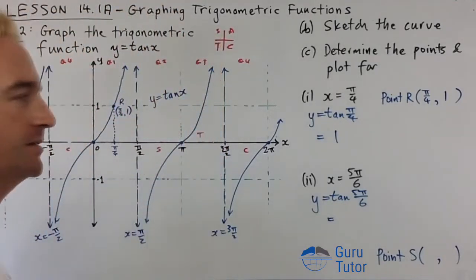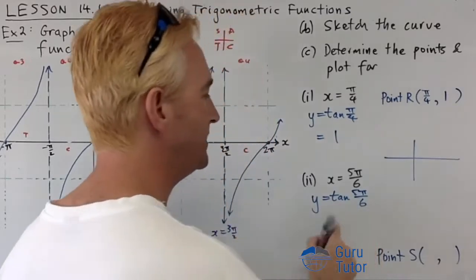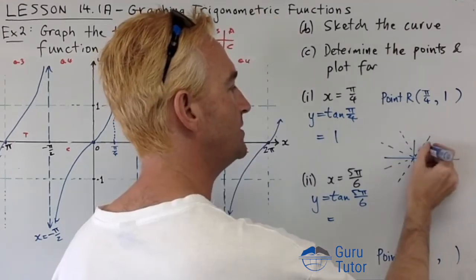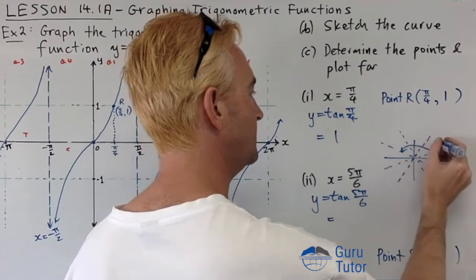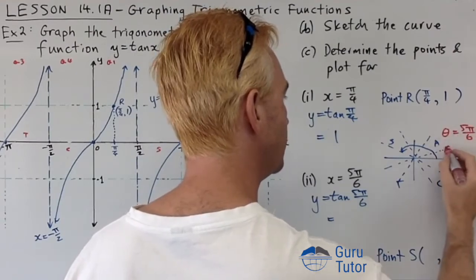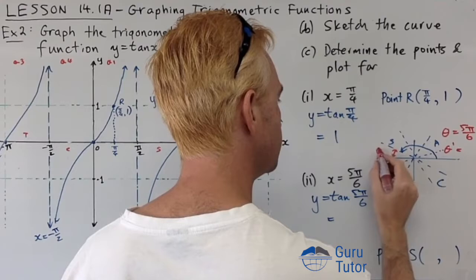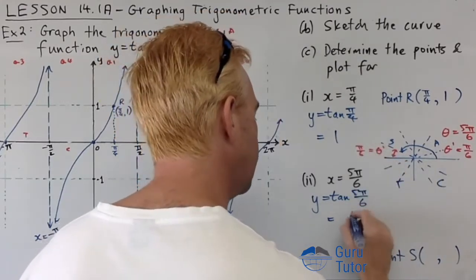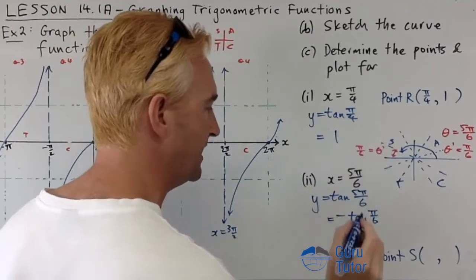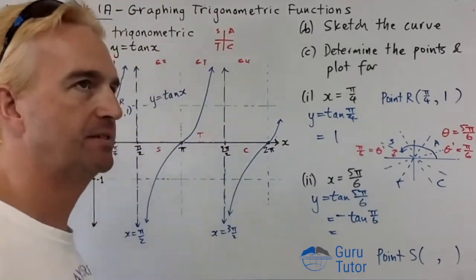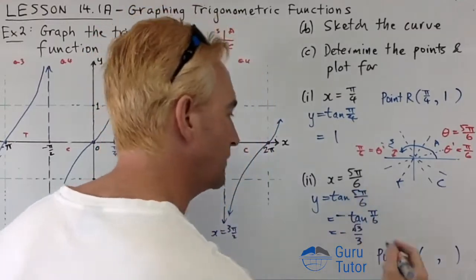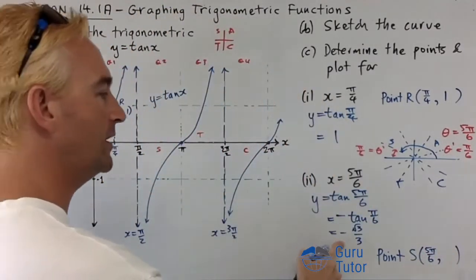For point S: x = 5π/6. Since that's larger than π/2, we use ASTC. Working in multiples of π/6, 5π/6 is in quadrant 2. The acute reference angle is π/6. In quadrant 2 only sine is positive, so tan is negative. tan(π/6) = tan(30°) = √3/3, so tan(5π/6) = −√3/3. The coordinates are (5π/6, −√3/3).